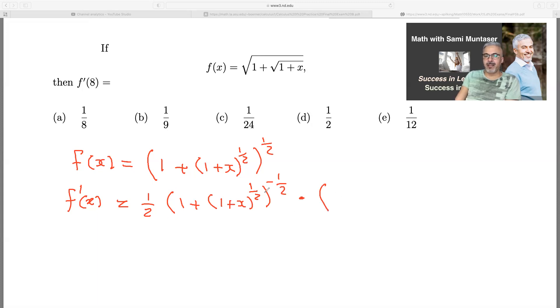But this here, you'll have to do the same thing, bring the half down, and then you'll end up with one plus x to the power of negative one half. And then you have to do the derivative of x. So you go on the inside and do the derivative of what's inside here. The derivative of x is one, so you don't even have to write it. And that is as far as you could go with that.